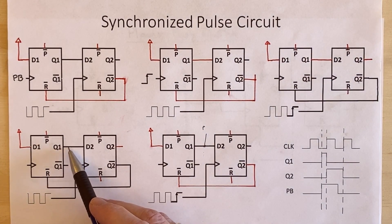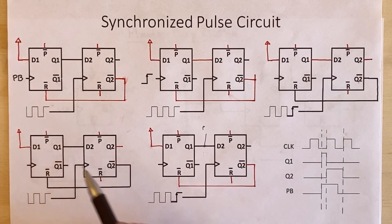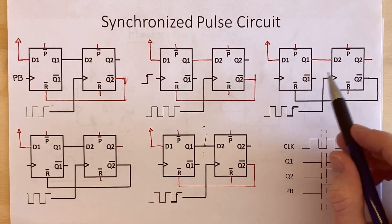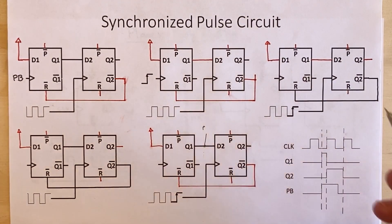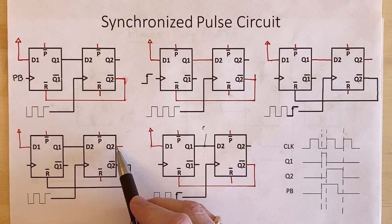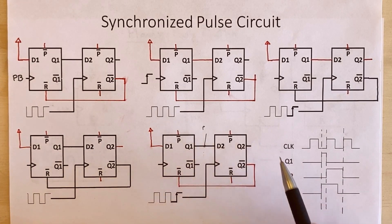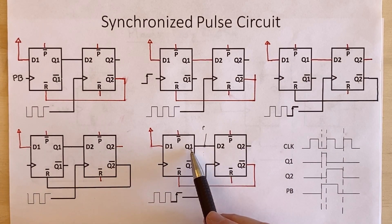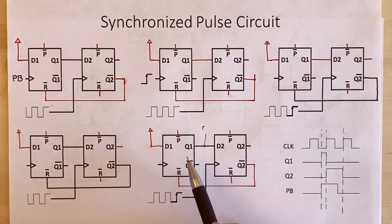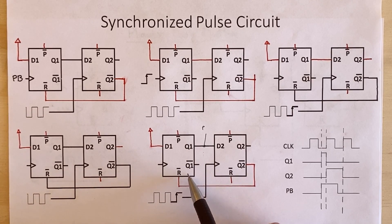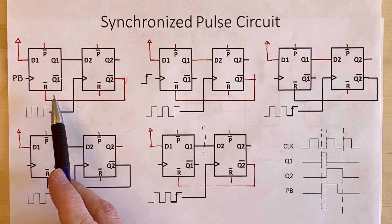Now Q1 goes low, so the input to the second flip-flop goes low too. These two events happen in a blink of an eye - just the propagation delay through the flip-flops, on the order of nanoseconds. So Q2 goes high for exactly one clock cycle. On the very next clock edge, Q2 goes low, Q2-not goes high again, and the reset is disabled. We've basically come back to our initial state, completing the cycle.